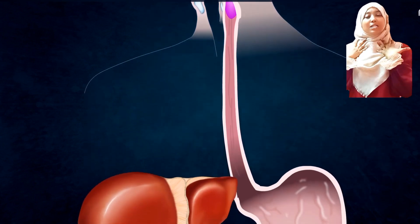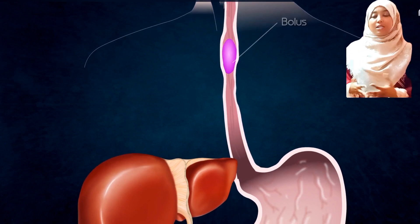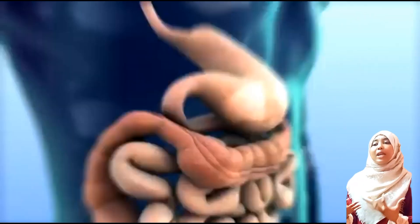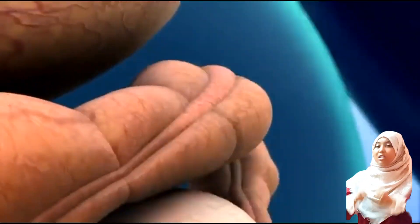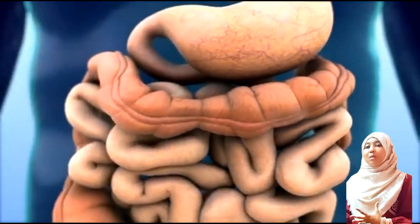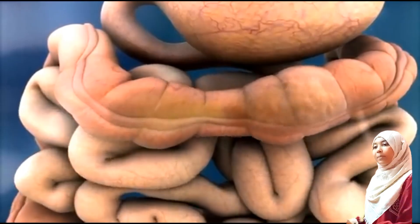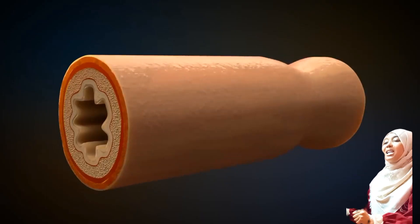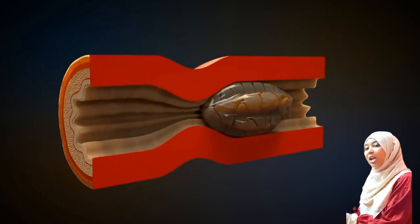In the esophagus, food substances move along by a force known as peristalsis. Along our alimentary canal we have circular and longitudinal muscles. When these muscles contract and relax rhythmically, they generate a force that pushes the food along the esophagus and into the stomach.